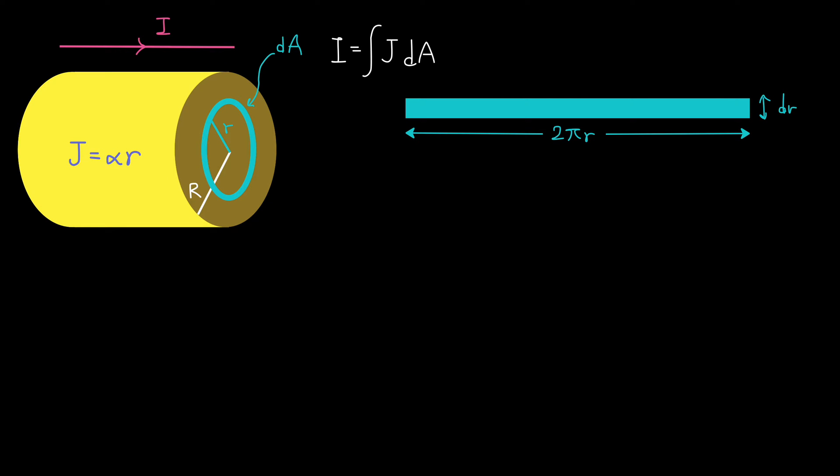The thickness of this rectangle is dr. And the length of the rectangle is equal to the circumference of the circular unit element, which is 2 pi r. So the area element dA can be expressed as 2 pi r dr.